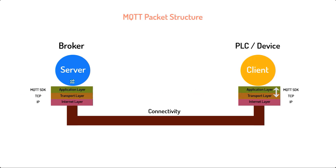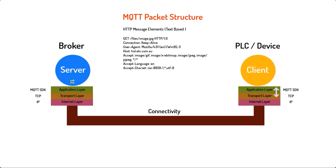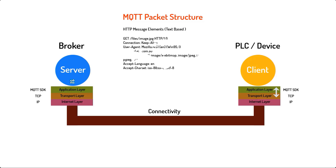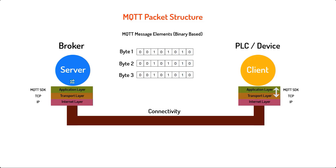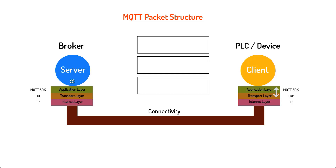Let's back up a bit to analyze the structure of an MQTT packet. Unlike HTTP, which is a text-based protocol meaning that it uses human-readable text strings to represent message elements, MQTT is a binary-based protocol, meaning that its message elements are binary bytes and not text strings. An MQTT packet has three fields: a fixed header, variable header, and a payload. The fixed header is present in every MQTT packet and its size is two bytes. The variable header and payload are not necessarily present in all packets.